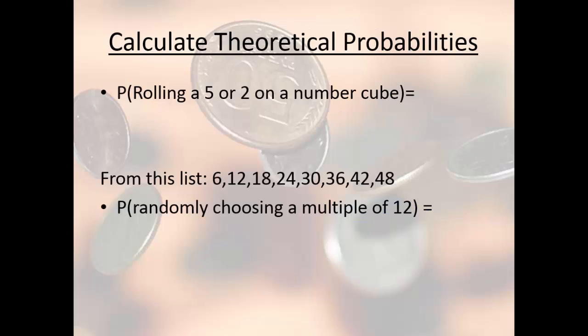Let's do two more. The probability of rolling a five or a two on a number cube is how many ways to win, which is two, out of all the possible outcomes, which is six. Because you can only win if you roll a five or a two and there's one of each of those. There's six faces all together on a cube. That reduces to one out of three.